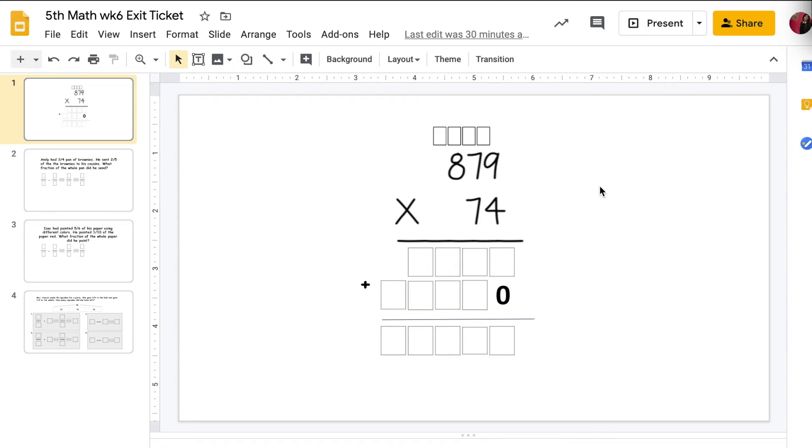All righty guys, so we are going to be doing our exit ticket today. We have 879 times 74. This is familiar to you guys. You just click on the box and put in the number.